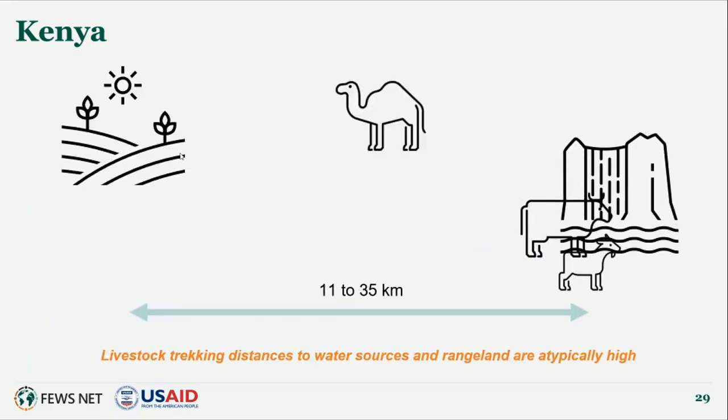Livestock body conditions are poor to very poor given the below average rangeland resources and long distances to water, resulting in poor conceptions and birth rates. The National Drought Management Authority in Kenya estimates that around 2.61 million livestock have died since October 2021, significantly reducing a key household asset in this area.